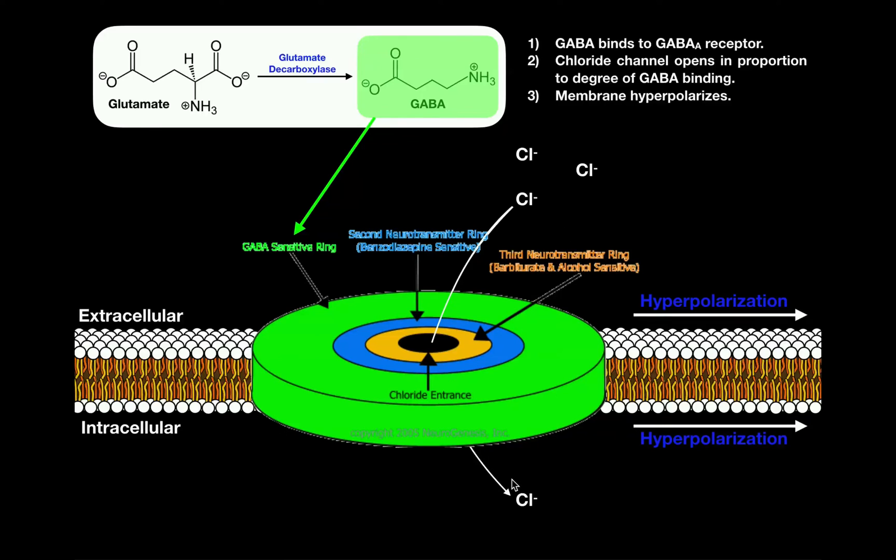To reiterate, you have to have GABA binding to the GABA-A receptor. The chloride channel in the center of the receptor, in the center of the protein, opens in proportion to the degree of GABA binding. And then, of course, chloride influx and membrane hyperpolarization, and that's what leads to the neuron itself becoming more inactive.